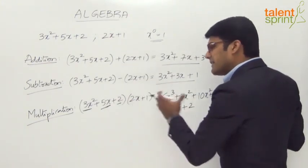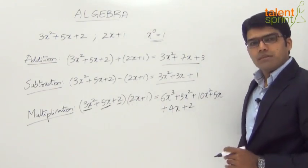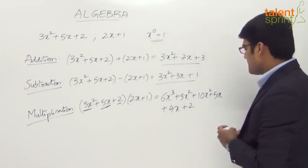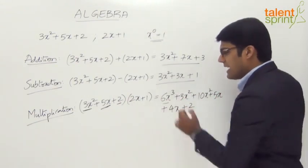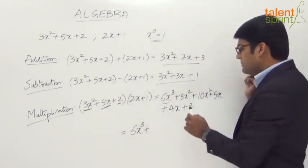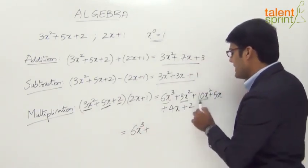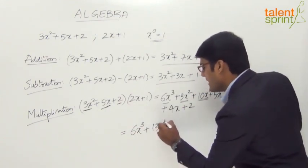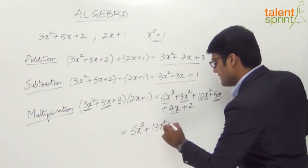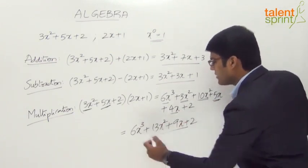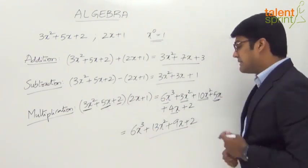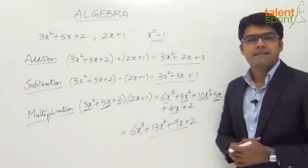Now we collect similar terms. We have only one term with x cubed, so that gives us 6x cubed. For power 2: 3x squared and 10x squared give us 13x squared. For power 1: 5x and 4x give us 9x. And finally the constant 2. So the product of these two polynomials is 6x cubed plus 13x squared plus 9x plus 2.